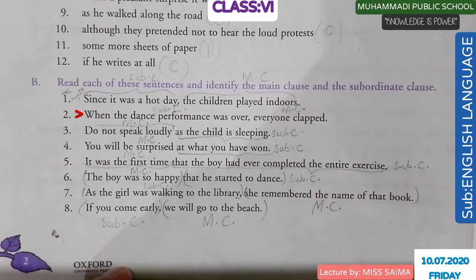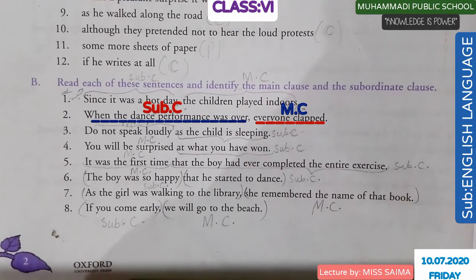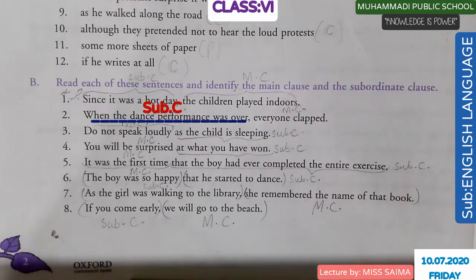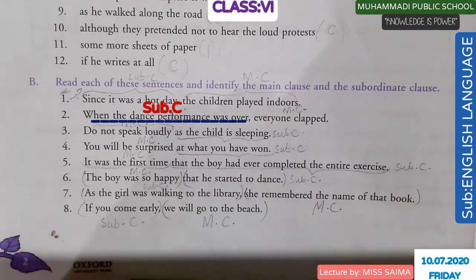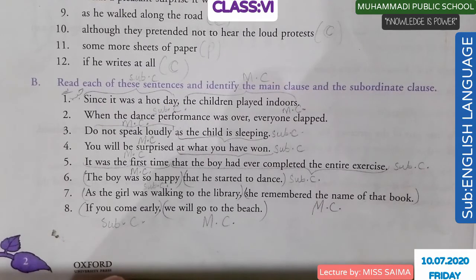Number 2: 'When the dance performance was over, everyone clapped.' 'Everyone clapped' is the main clause. 'When the dance performance was over' is the subordinate clause.